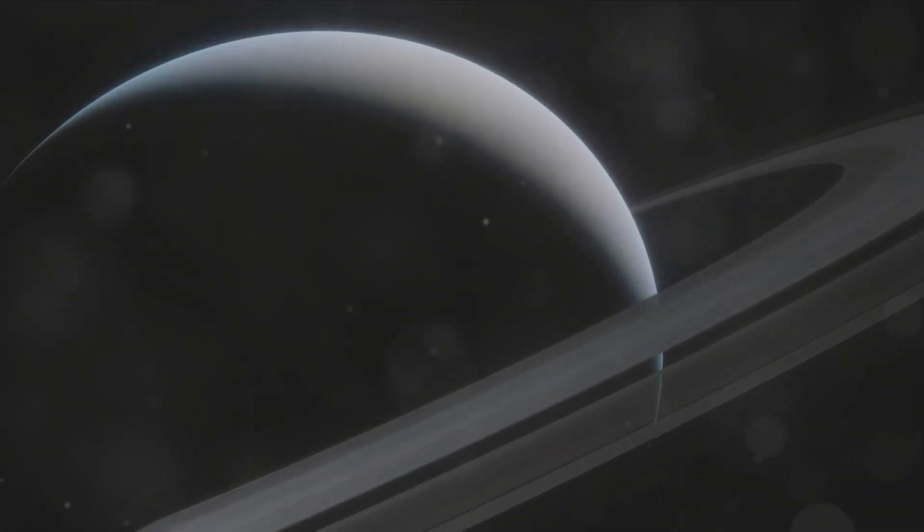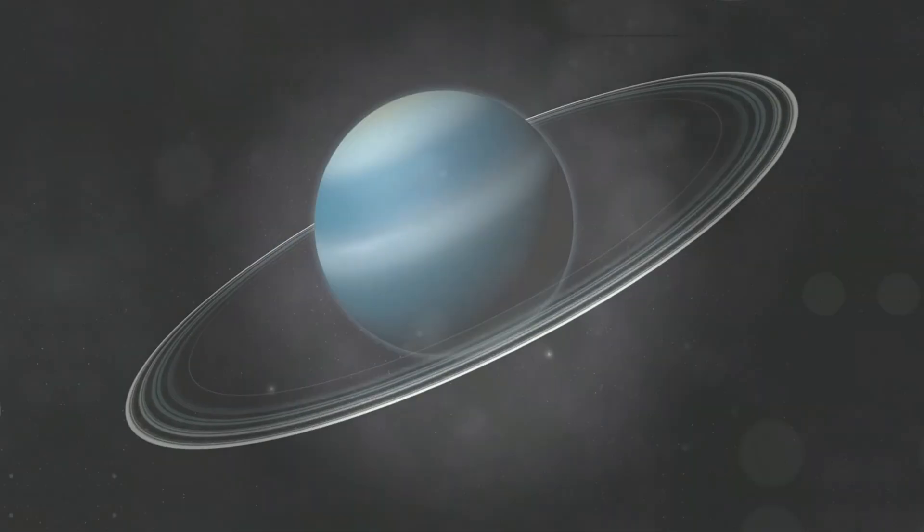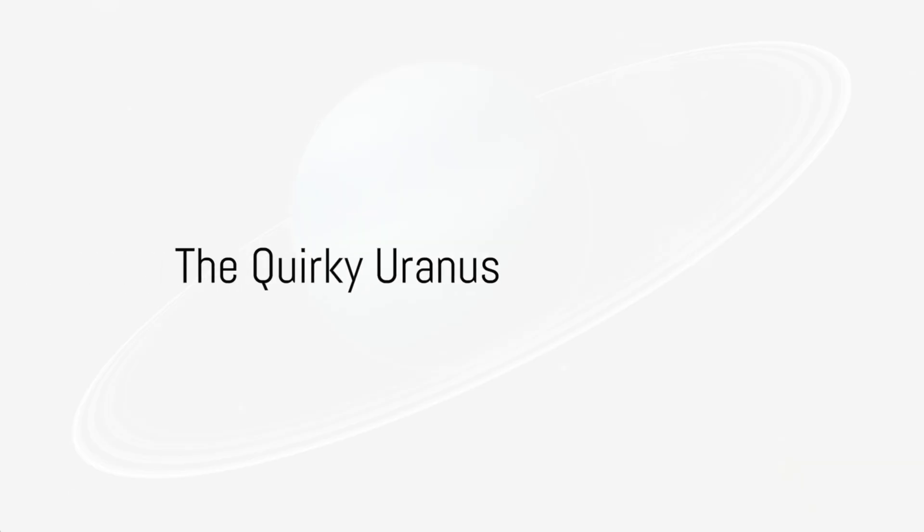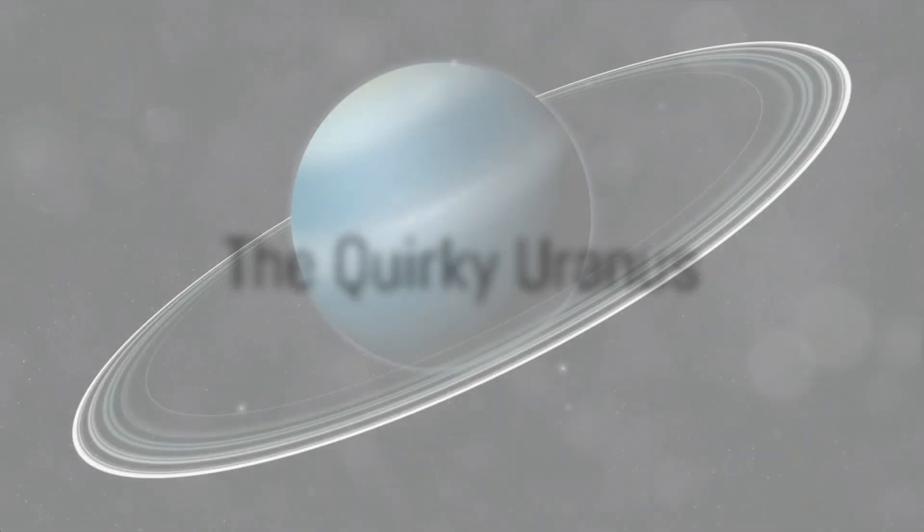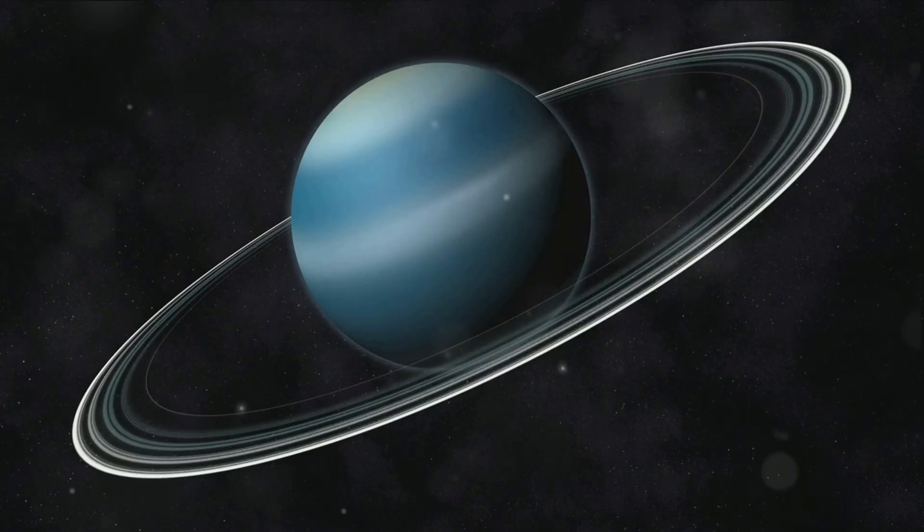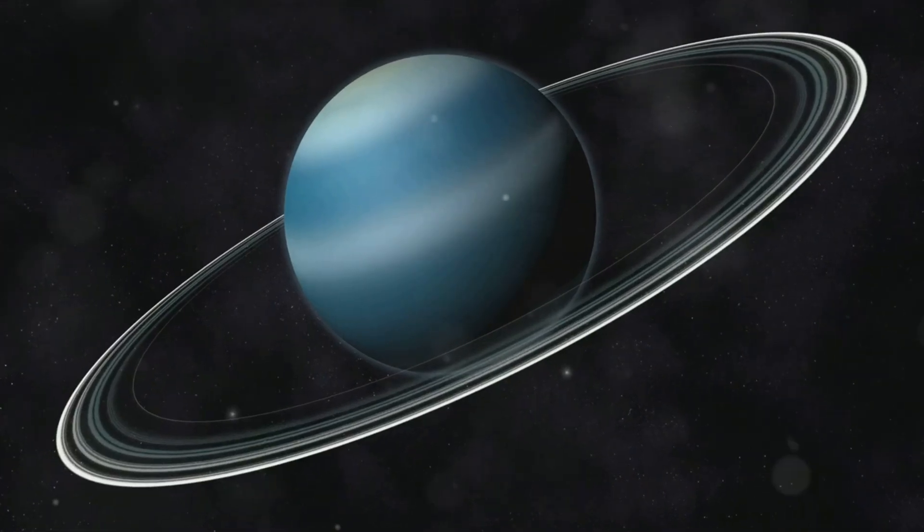Saturn, with its stunning rings of ice and rock, left Milo dreaming of skating on those rings. Uranus, the icy blue planet, had a unique feature. It rotated on its side. Milo chuckled at the thought of everything on Uranus walking sideways.